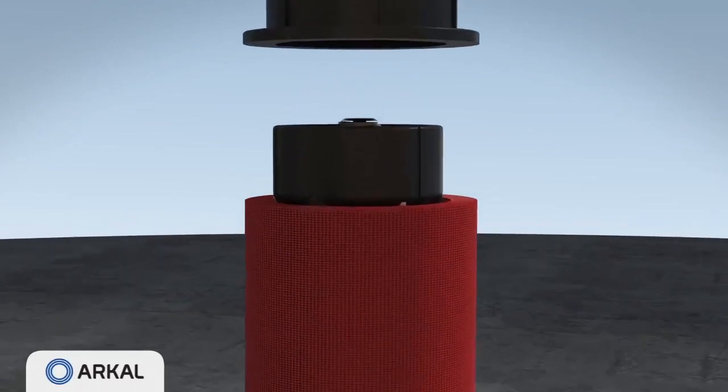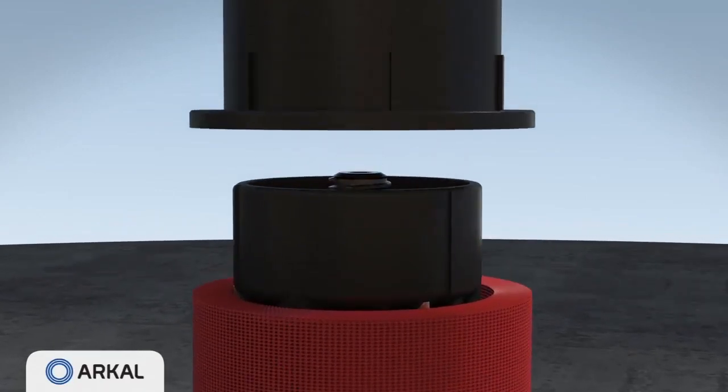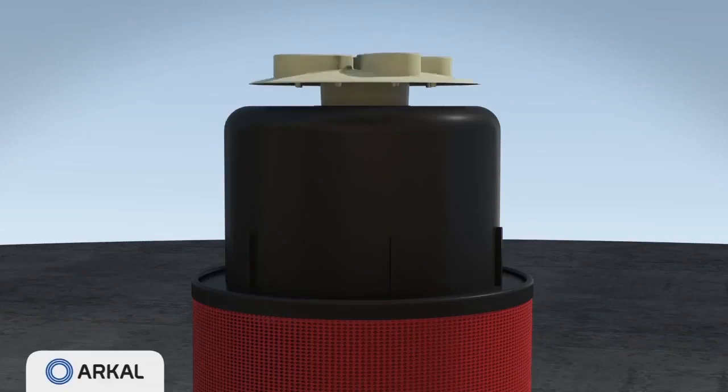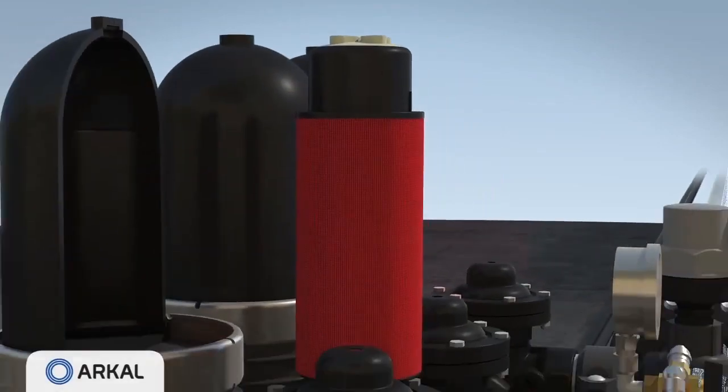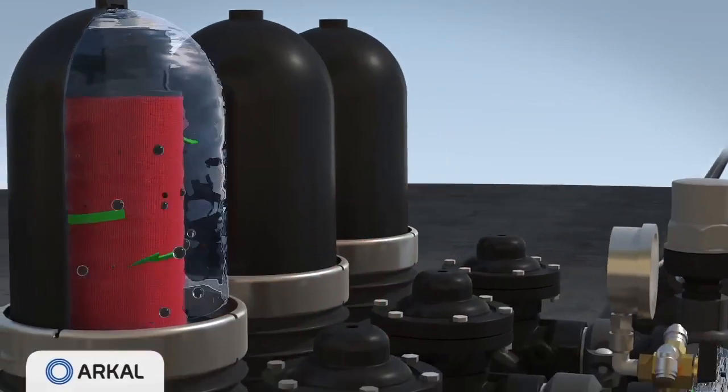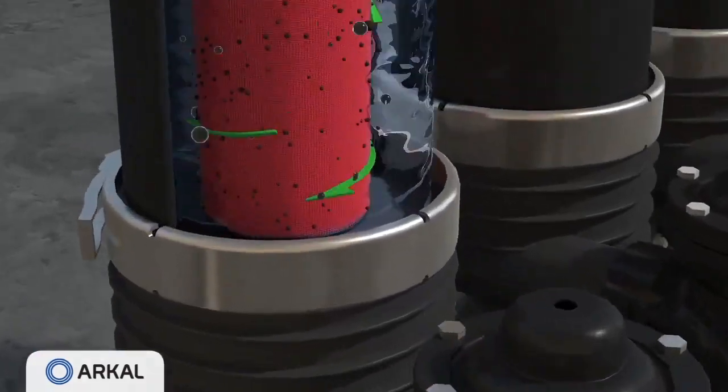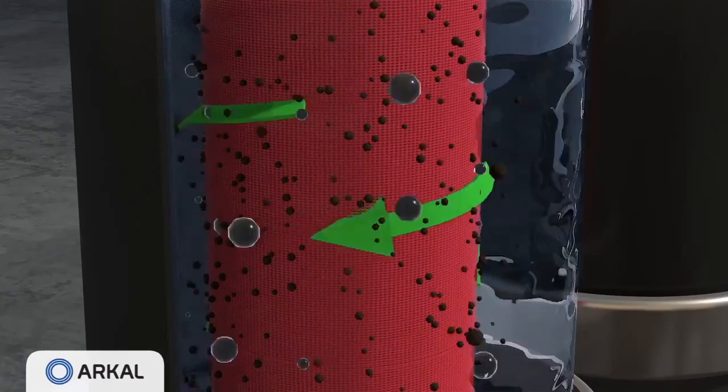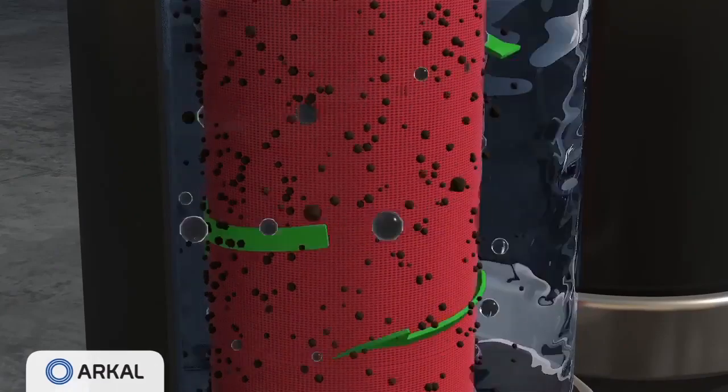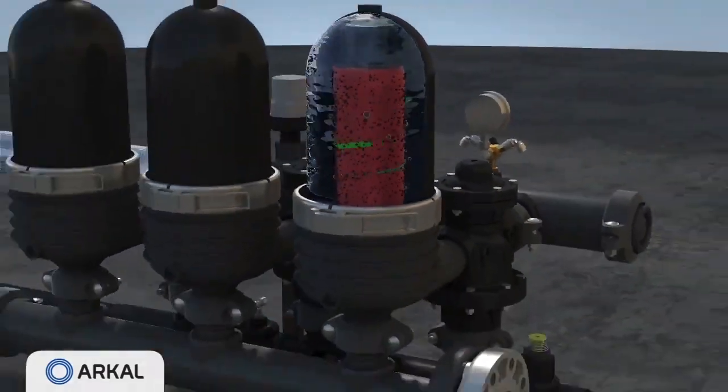During filtration, the force of the spring and the differential pressure firmly compresses the discs together. Water permeates from the outer diameter to the inner diameter of the filter element and suspended solids are trapped on and within the discs matrix. Filtered water flows through the filter outlet port.